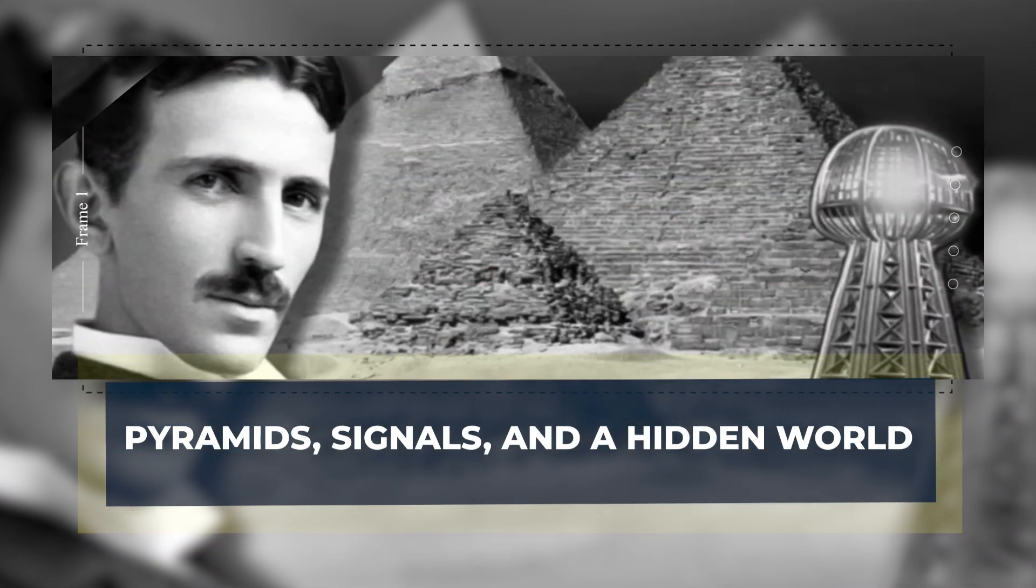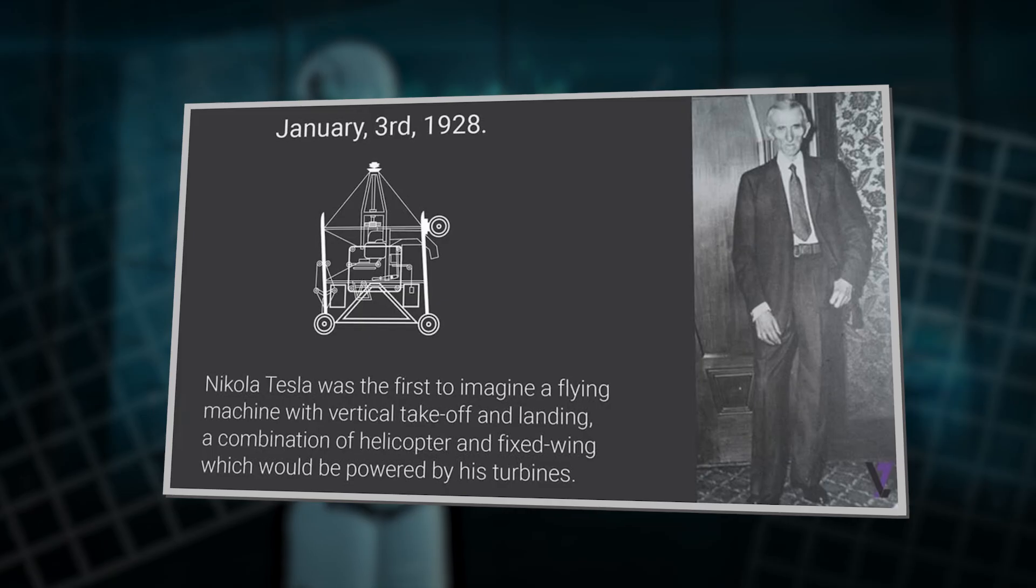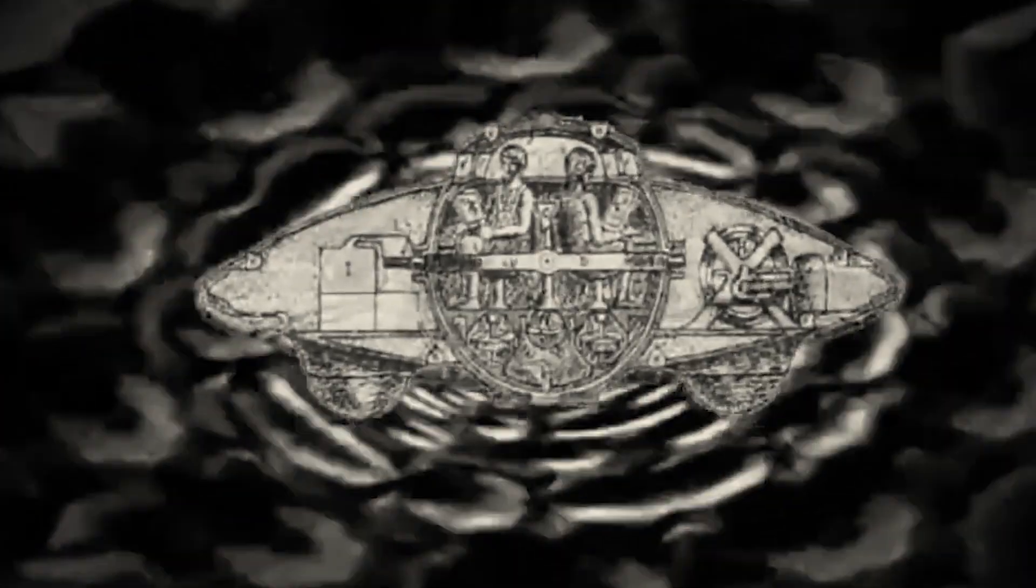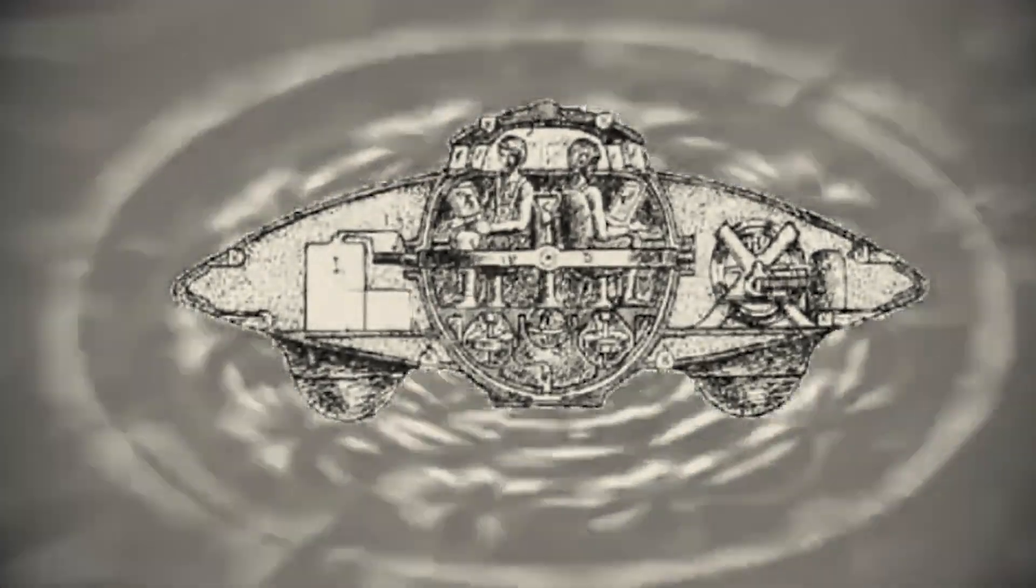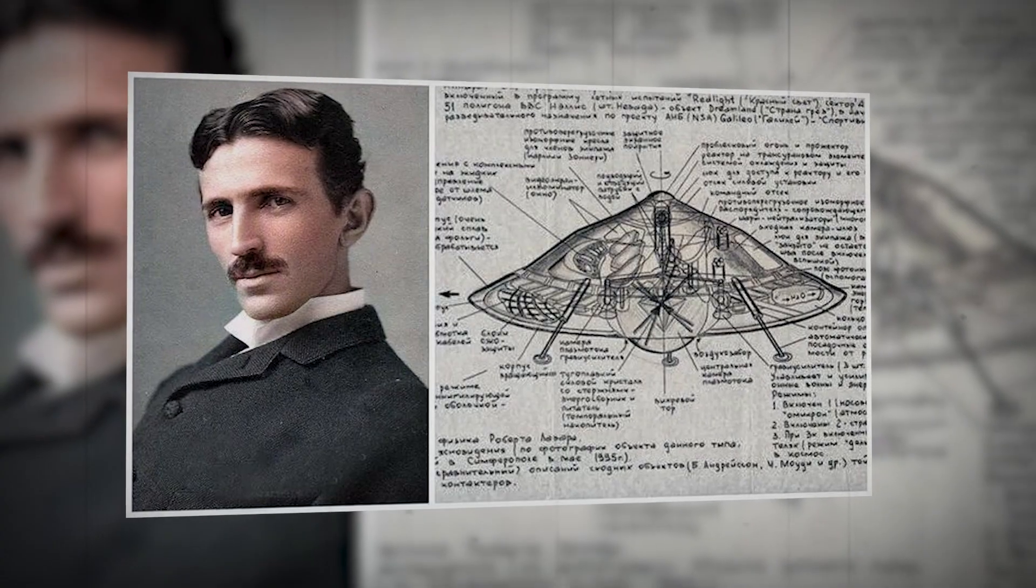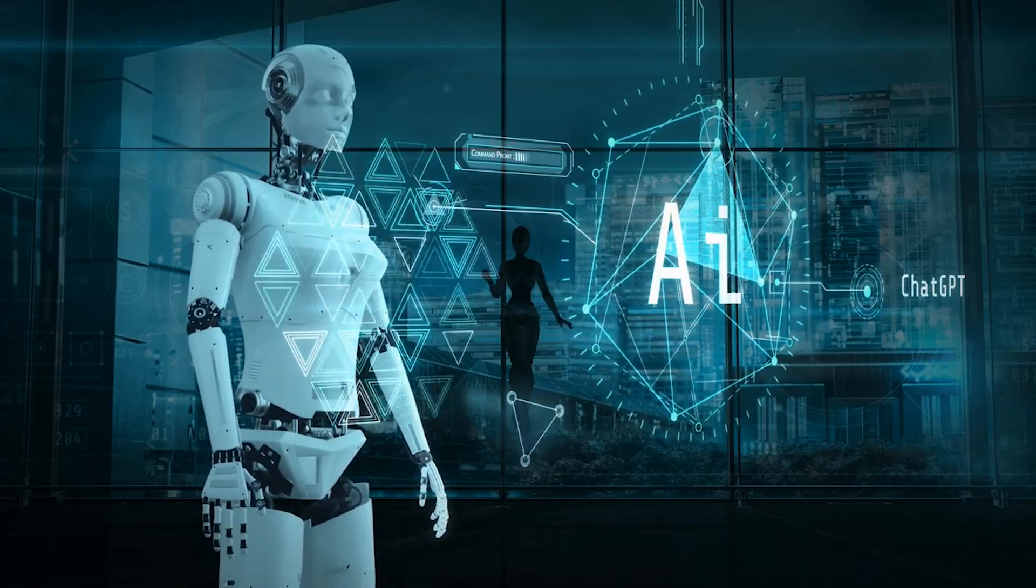Pyramids, signals, and a hidden world. To understand what the AI saw next, you have to strip the 1928 device down to its bones. It has three parts. A metal plate, raised high. A chamber that stores charge. And a deep ground connection. Antenna, capacitor, ground. With that pattern in mind, the AI looked far away in time, at the Great Pyramid of Giza.